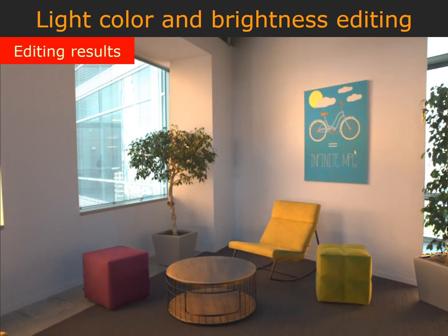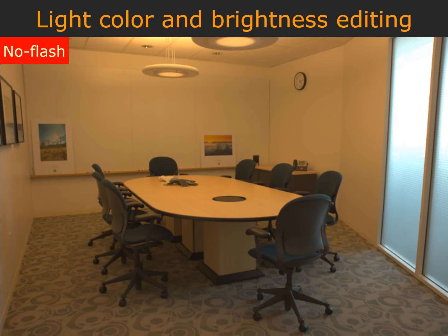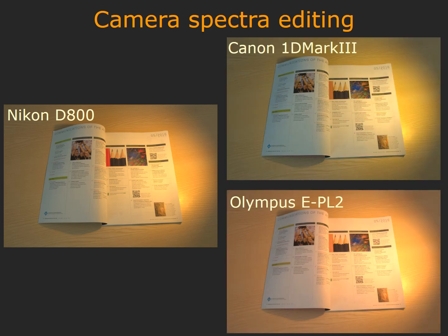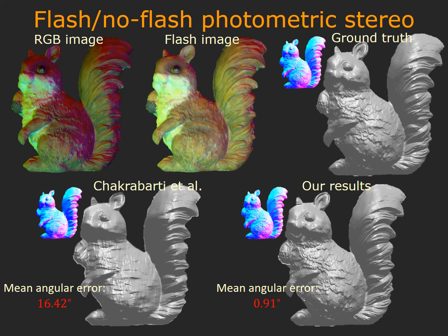Note how our method changes the color and brightness of each light while realistically rendering all shading effects. Our technique also enables editing the camera's spectral response function. Given the estimated separated images, we can simply substitute the camera response with a novel function. We propose augmenting the RGB single-shot photometric stereo setup by capturing an additional image lit by a flash co-located with the camera. We use our source separation technique to create three images, at which point we can use standard calibrated photometric stereo to estimate surface normals, leading to results orders of magnitude more accurate than the state-of-the-art.